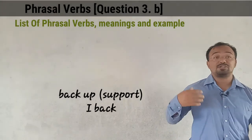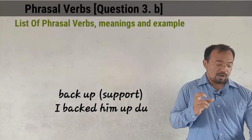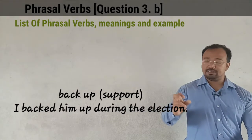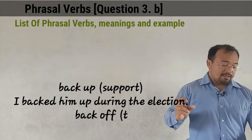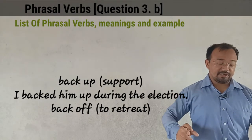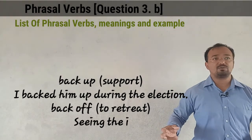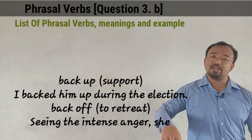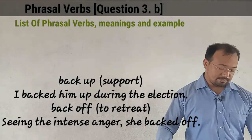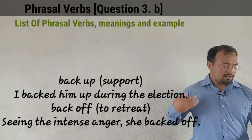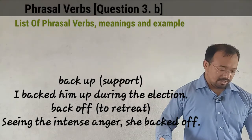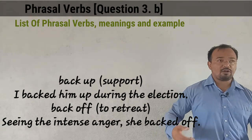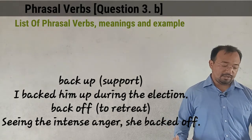Next, 'back up' means to support. Example: 'I backed him up during the elections' — meaning someone supported him. Next, starting with B again, 'back off' means to retreat. Example: 'Seeing the intense anger, she backed off' — meaning she retreated, not accompanying further.